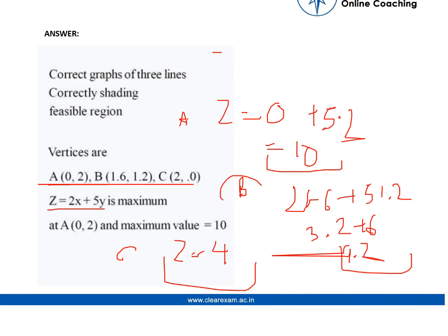So at the value of A, we're getting maximum value which is 10. So at point A equals (0, 2), the maximum value for the graph is 10. Thank you.